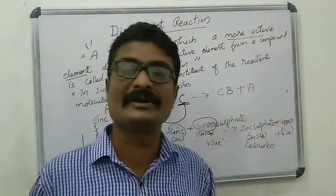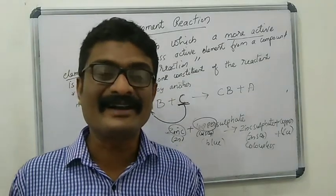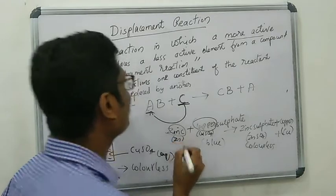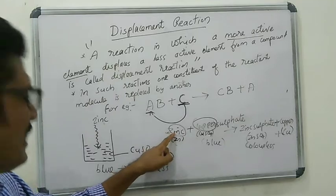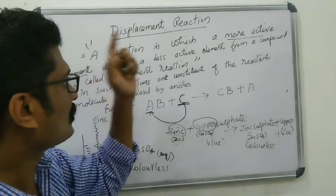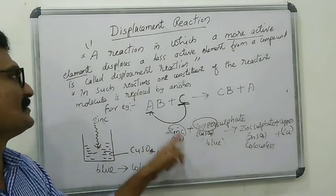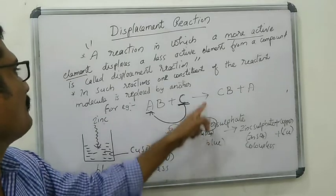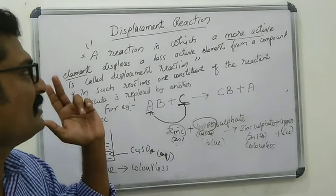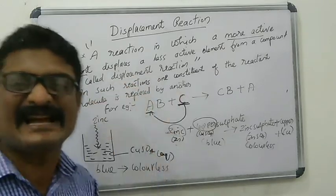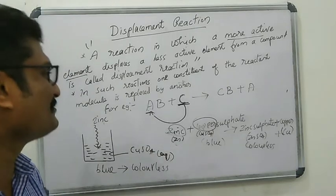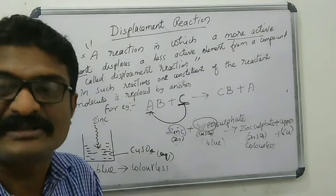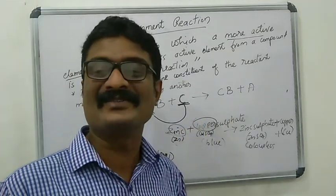This kind of reaction is called a displacement reaction. A reaction in which a more active element displaces a less active element from a compound is called a displacement reaction. For example, the more active element zinc can displace the less active element copper from copper sulfate solution.